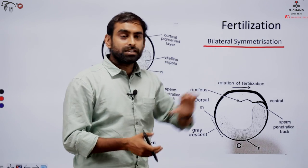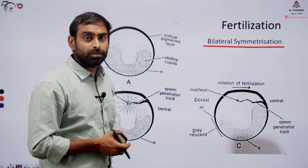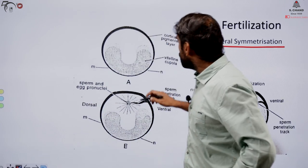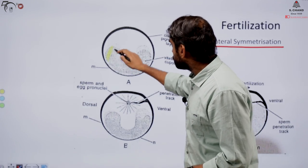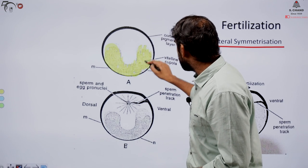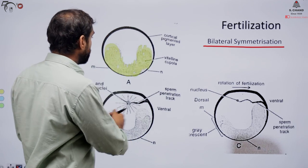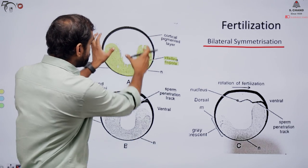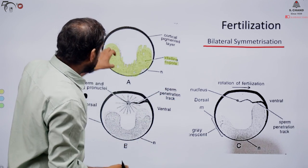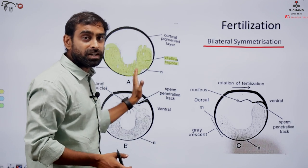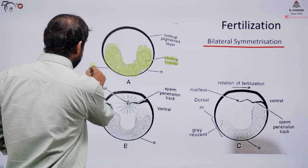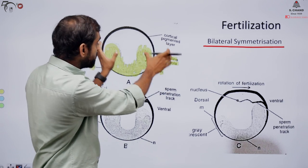From a radially symmetric egg, it turns into a bilaterally symmetrical egg — a bilaterally symmetrical zygote. This is an early event that decides many things. The early bilateral symmetrization — the change from radially symmetric to bilaterally symmetric — decides the front and back part, and the dorsal and ventral part of the body. Initially, this egg has pigmented cells called the vitelline copula present at a specific position, and remains radially symmetrical.